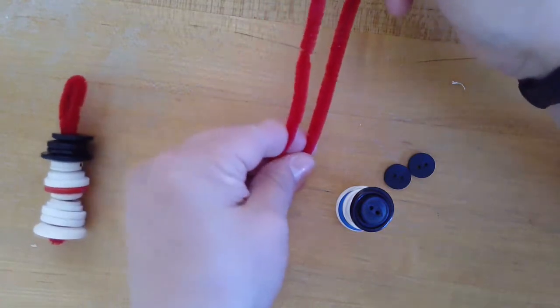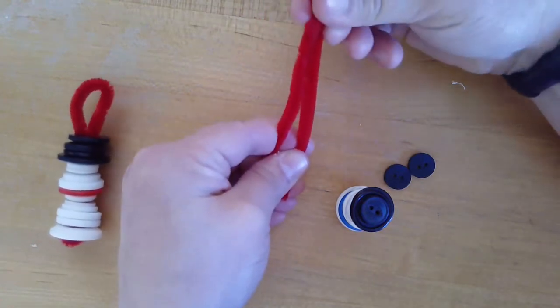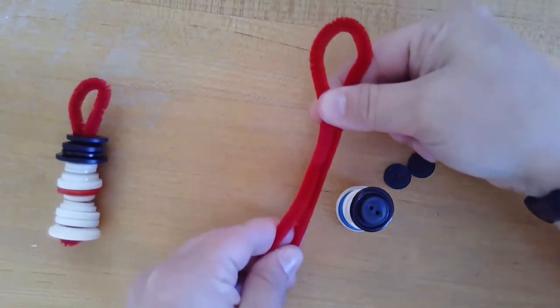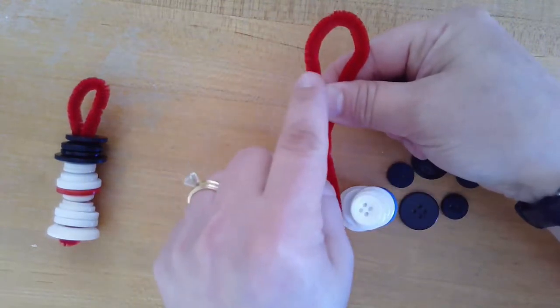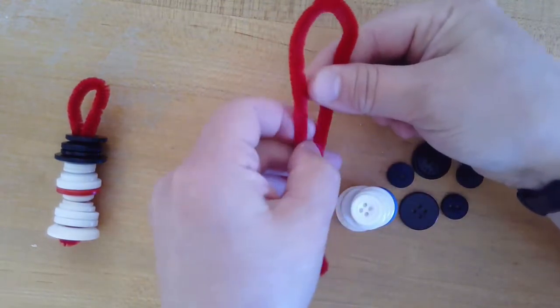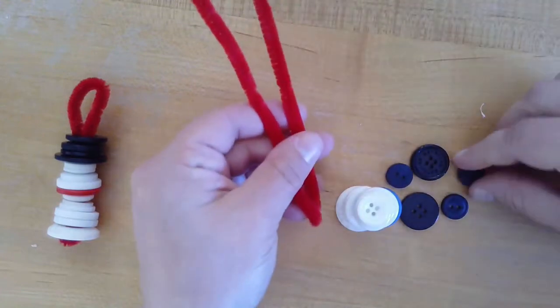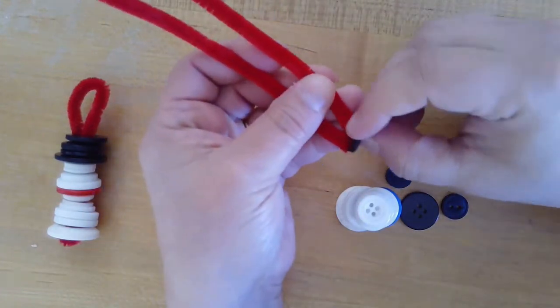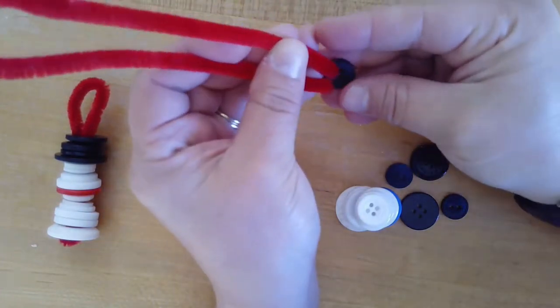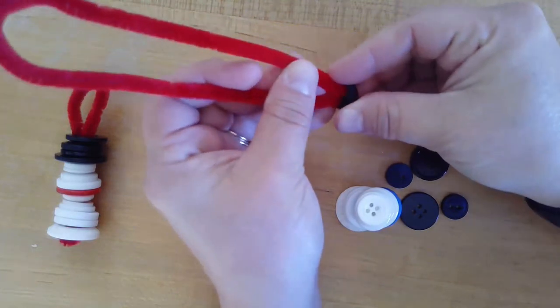You're going to fold your pipe cleaner in half, and make sure to leave about a half inch to an inch at the top for your hanging part. Start with the smallest parts of the hat and thread them through two of the holes.